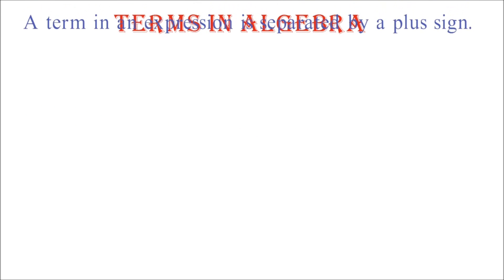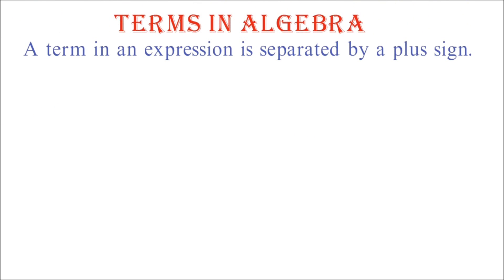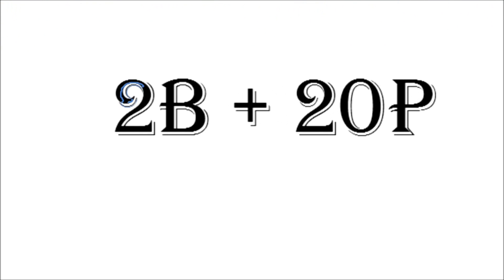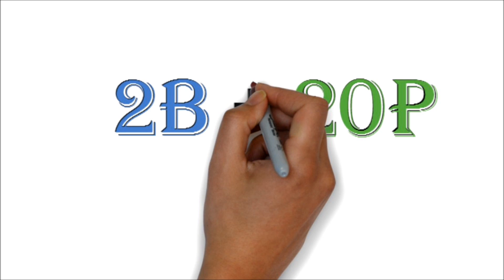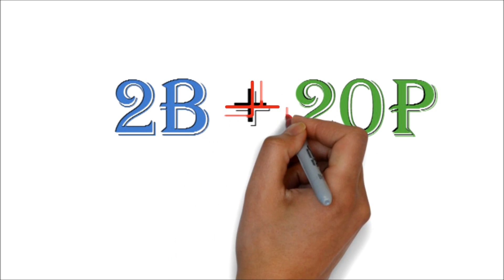What is a term in algebra? A term in an expression is separated by a plus sign. Example, 2b plus 20p has two terms, the 2b and 20p. Notice they are separated by a plus sign.